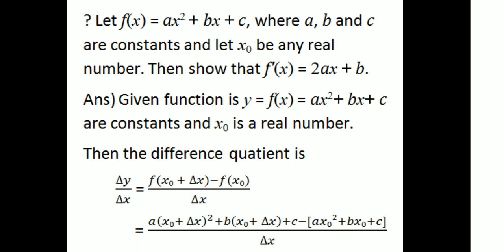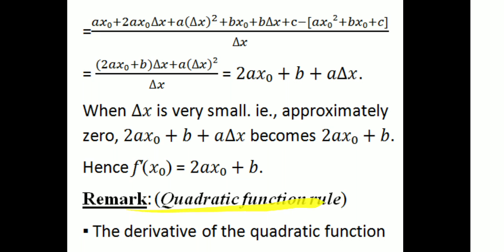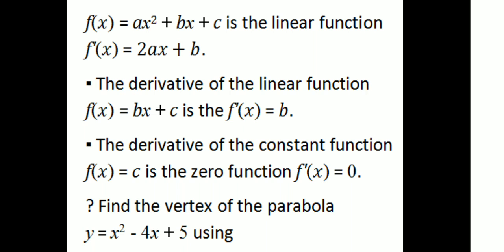Next example: f of x is ax squared plus bx plus c. This is what we have done with the quadratic function rule. The derivative of the quadratic function f of x equals ax squared plus bx plus c is the linear function f dash of x equals 2ax plus b.